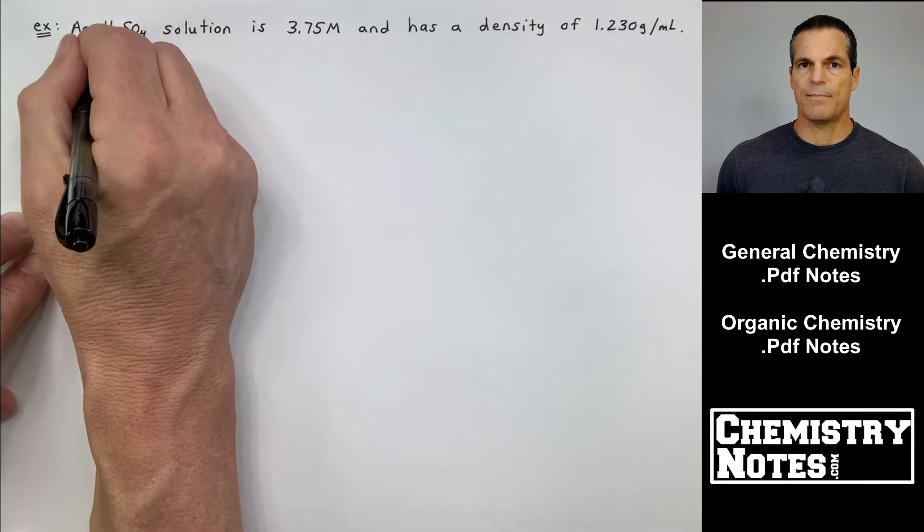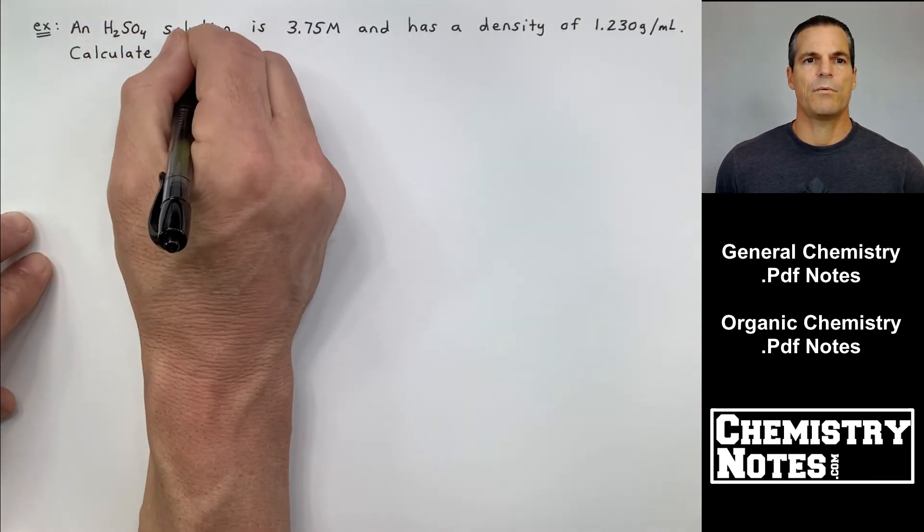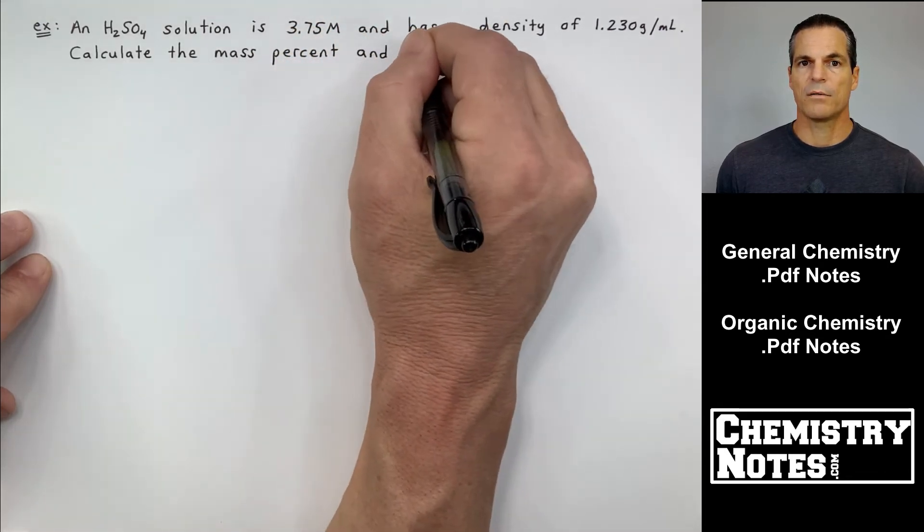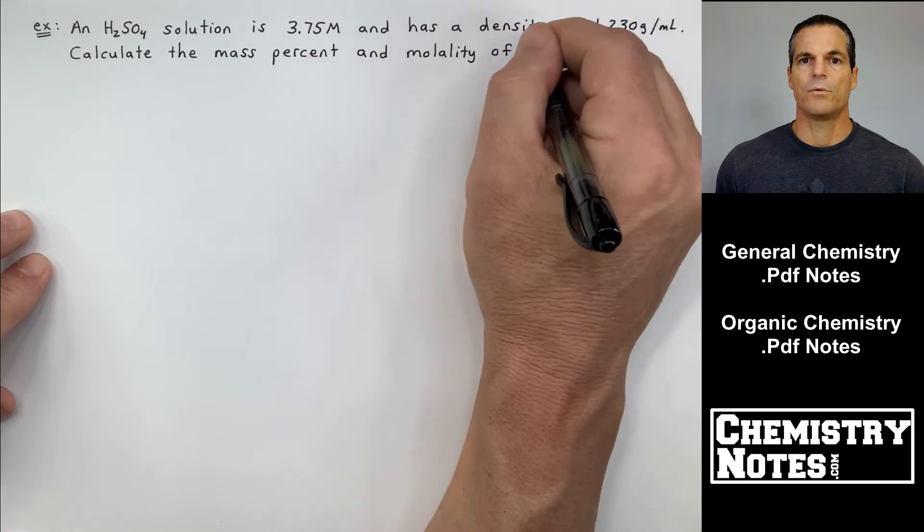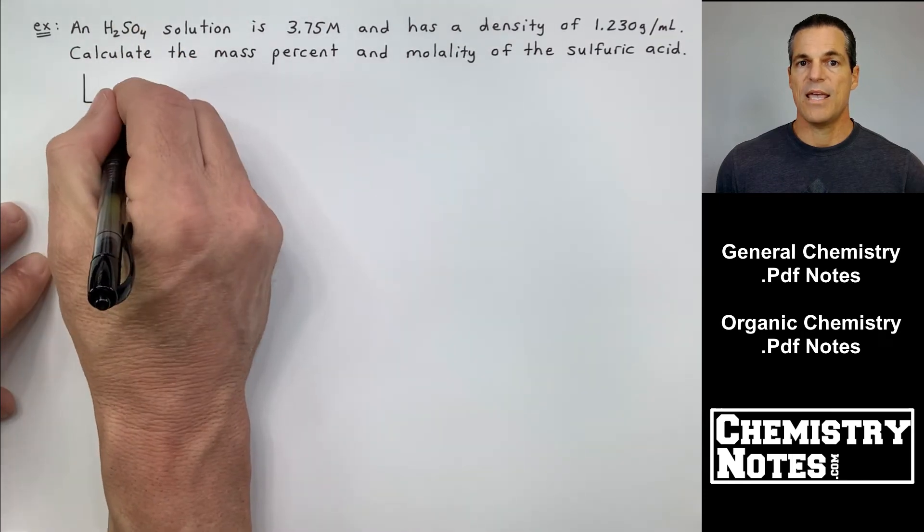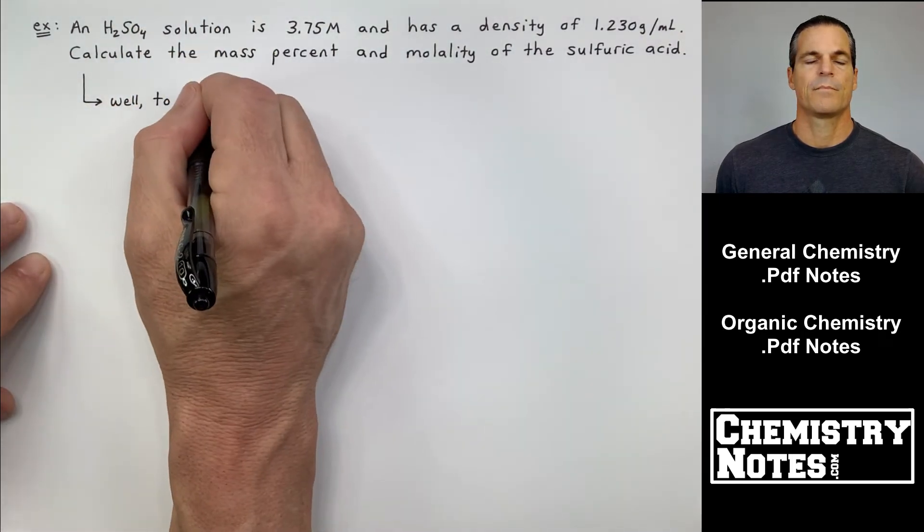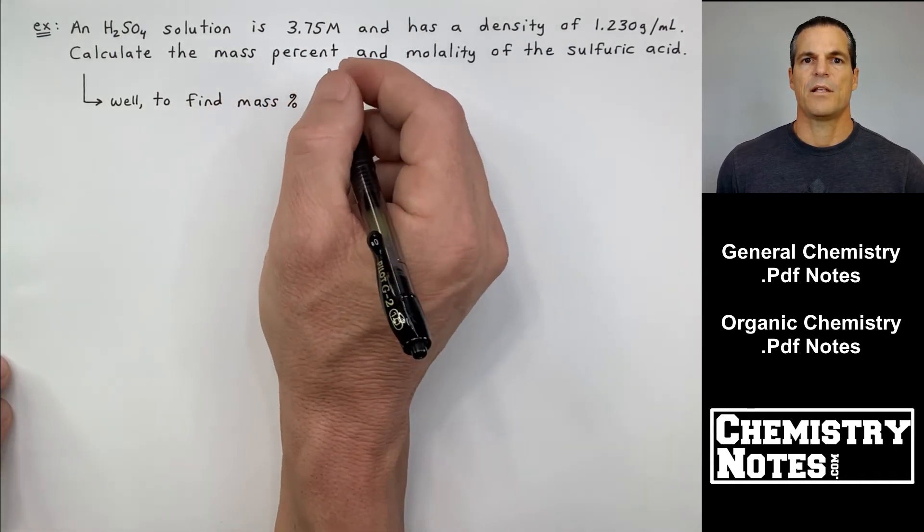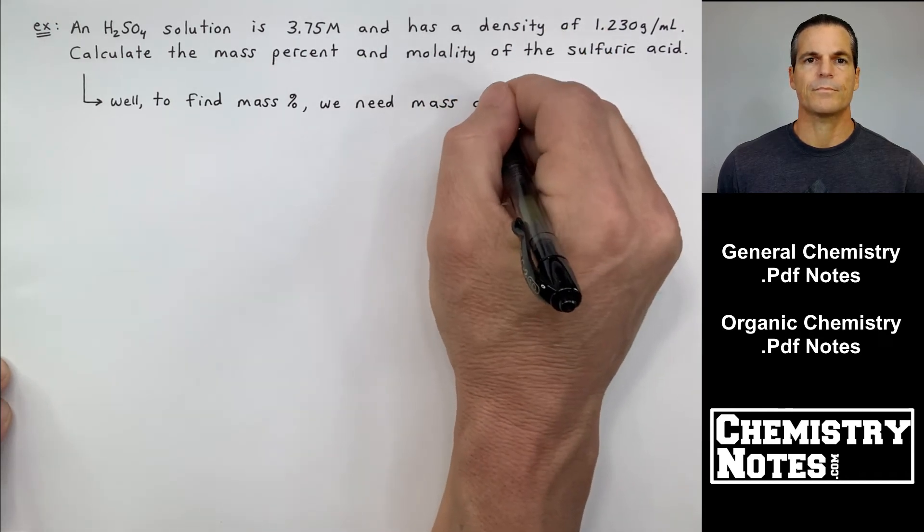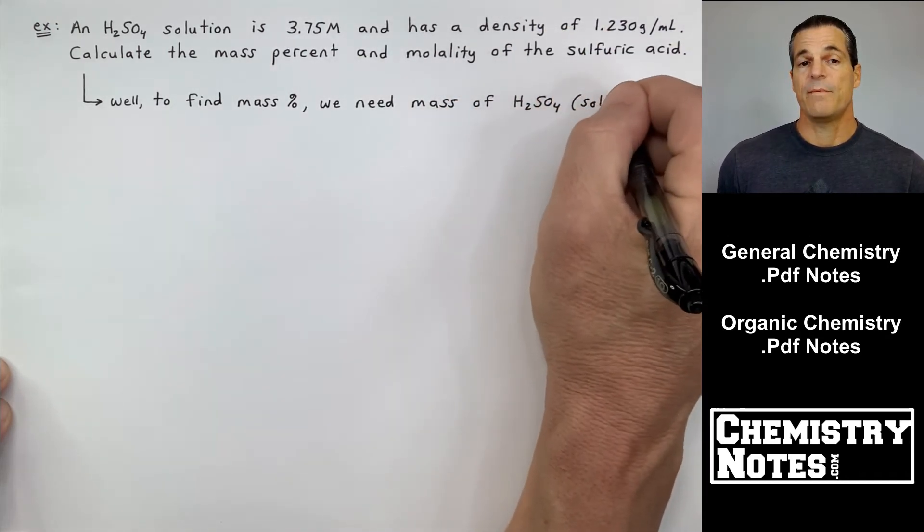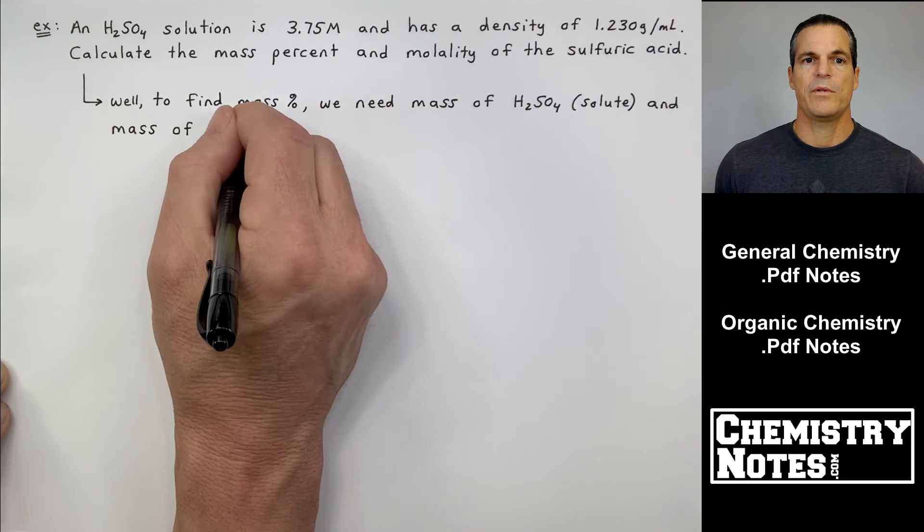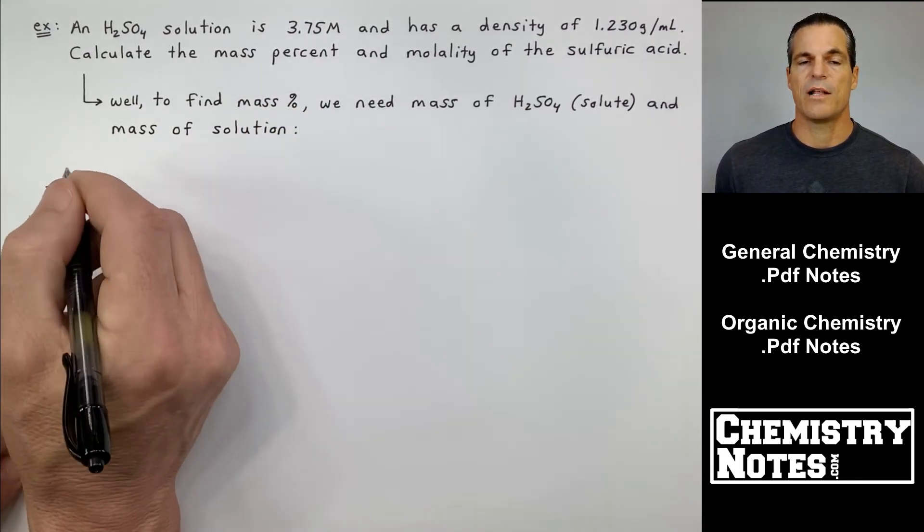All right, let's finish off this short video with an example. It says an H2O and H2SO4 solution is 3.75 molar and has a density of 1.230 grams per milliliter. Calculate the mass percent and molality of the sulfuric acid. So they're giving us the molarity and the density. To find mass percent, we need the mass of H2SO4 solute. That's our numerator. And then we need the mass of everything, the mass of the solution, and that'll be our denominator.